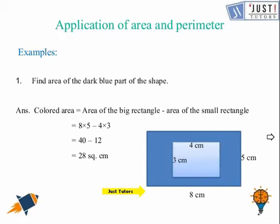So as we can see that this dark blue part is the difference in area of big rectangle, the one outside, and the area of small rectangle, the one inside. So we calculate the area of big rectangle by multiplying 8 with 5, and small rectangle is calculated by multiplying 3 with 4. And the difference comes out to be 28 square centimeter.